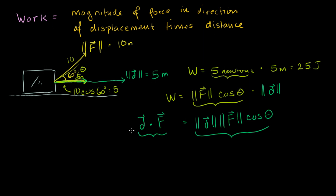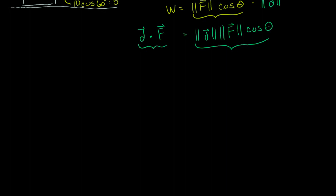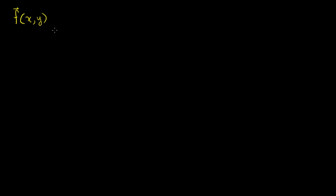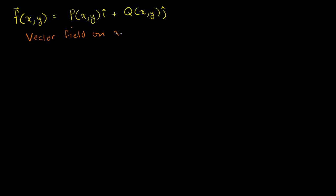This is all review of fairly elementary physics. Now let's take a more complex example — really the same idea. Let's define a vector field. Let's say I have a vector field f, a function of x and y, equal to some scalar function of x and y times the i unit vector, plus some other scalar function of x and y times the j unit vector. This is a vector field in two-dimensional space, on the xy plane.